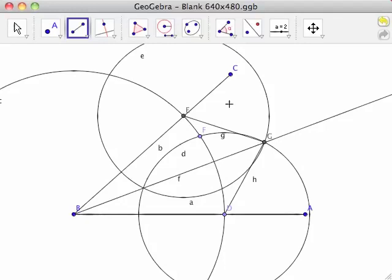Angles EBG and DBG are corresponding parts of congruent triangles and are therefore congruent. So, half line BG bisects angle B.